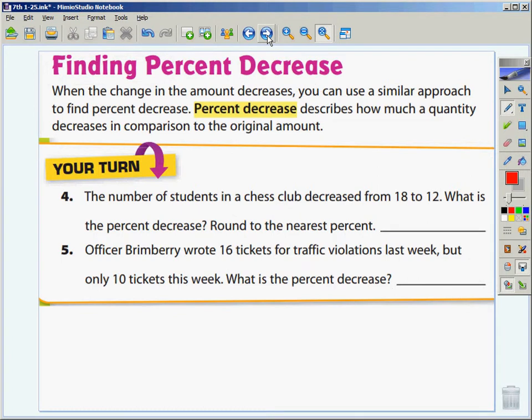I want to talk about percentage decrease. You're going to find it on the next page, but I'm not worried about whether you see where that's at. When the change in the amount decreases, you use the similar approach to find the percent decrease. Percent decrease describes how much a quantity decreases in comparison to that original amount. So, the formula is still the same when you're doing percentage decrease. It's the amount of change divided by the original amount.